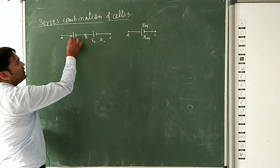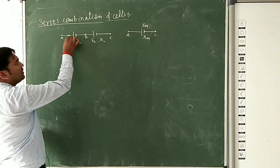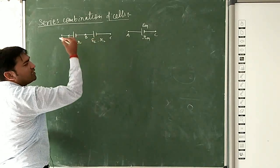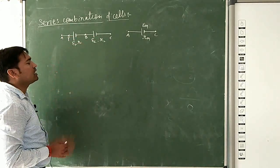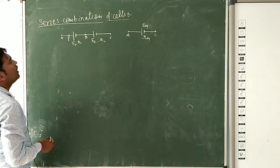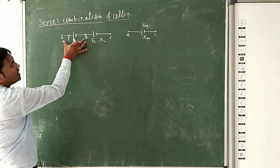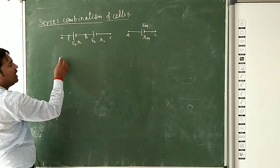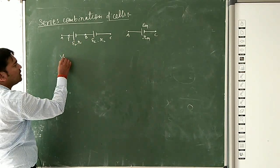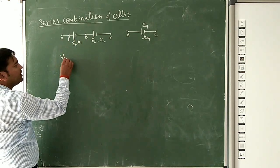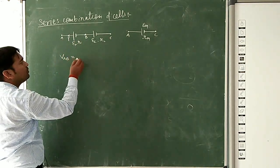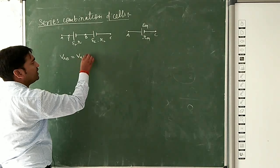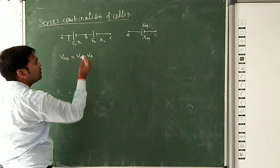First of all, you know that the positive side of current flow will be I. In series, current will be the same on both sides of the circuit. Now, the terminal potential difference across points A and B, which we write as VAB, will be the terminal potential difference VAB.